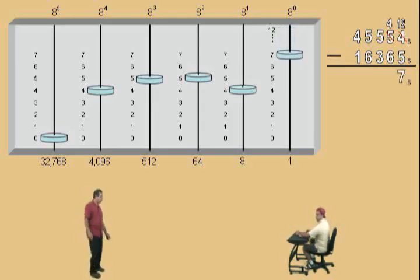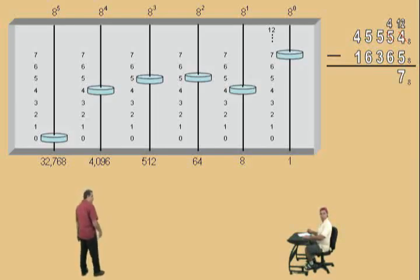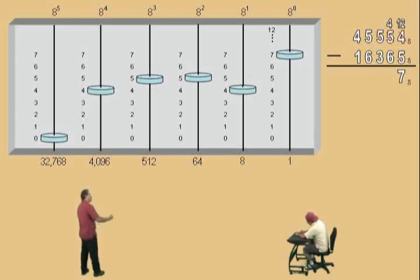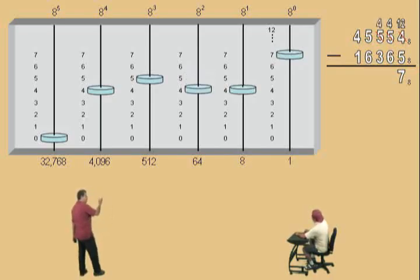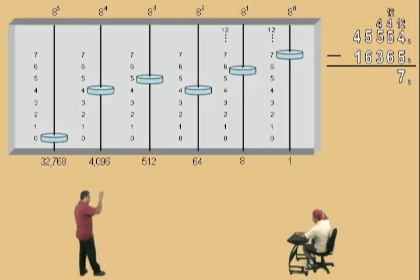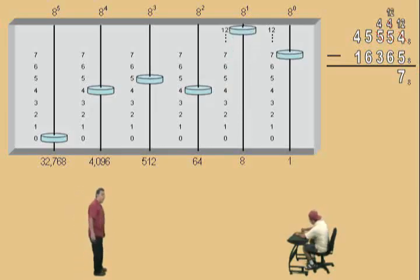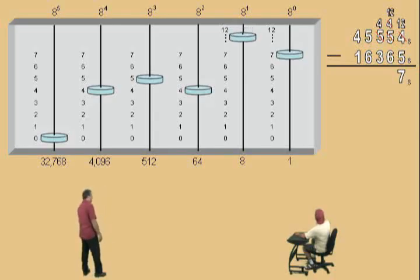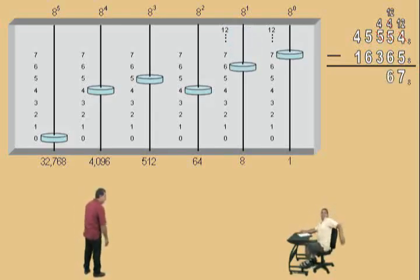All right, Charlie, now we're on our 8 to the 1st power place value. We have to do 4 subtract 6 — we can't do that. So we have to borrow an 8 from our next place value. That 5 becomes a 4, and now we get to add an 8 to that 4, and what's 4 plus 8? 12! That's right, it's 12, and now we can do our subtraction. What's 12 subtract 6? 6. Very nice, Charlie. Record that 6.